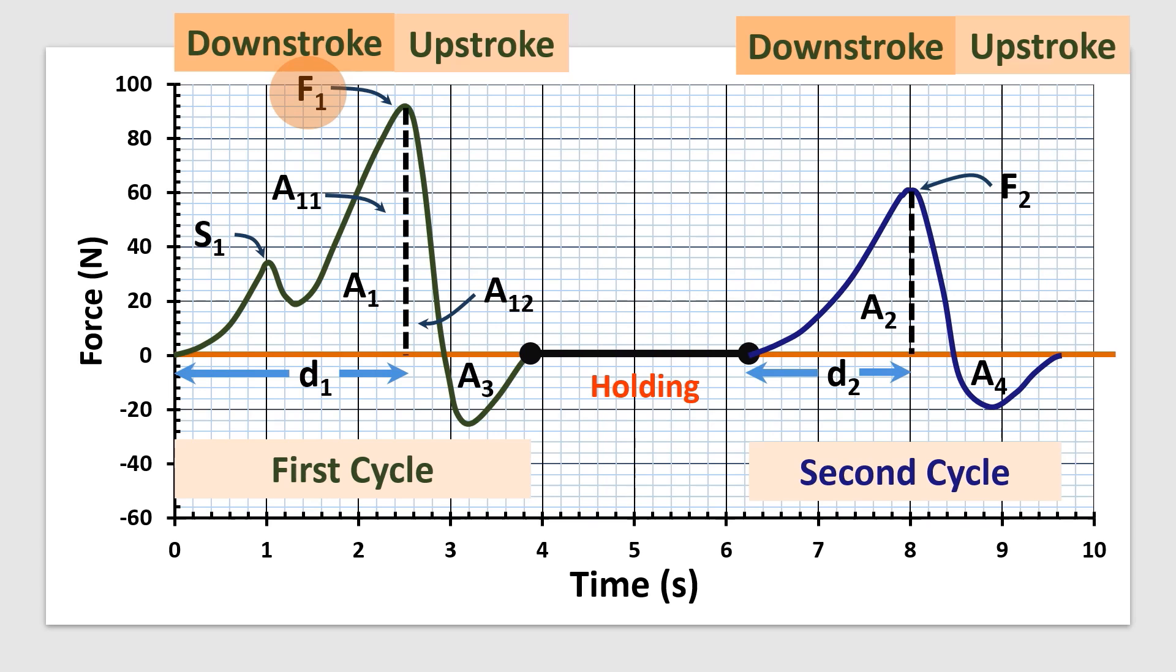Cohesiveness is the ratio of the positive area of the second cycle to the positive area of the first cycle, that is cohesiveness equals A2 divided by A1. It indicates the strength of the internal bonds of a food and unit is dimensionless. In brittle materials cohesiveness is low, whereas hardness can be varied.